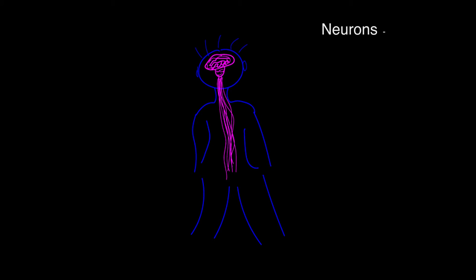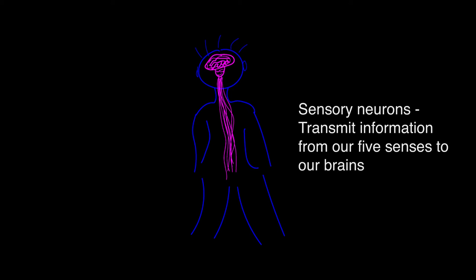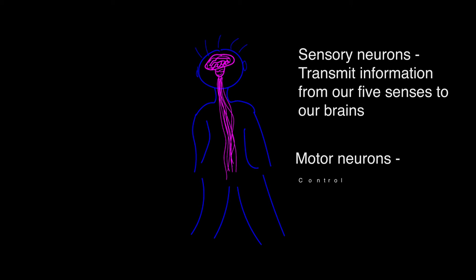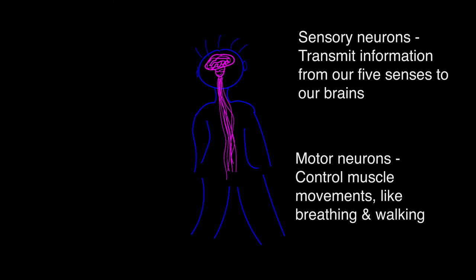Neurons are critical to our everyday functioning, as they are responsible for transmitting and processing information. For example, sensory neurons help us to experience the world around us by transmitting information from our five senses to our brains, while motor neurons transmit signals from our brains to our muscles, so we can do things like walk, talk, and breathe.